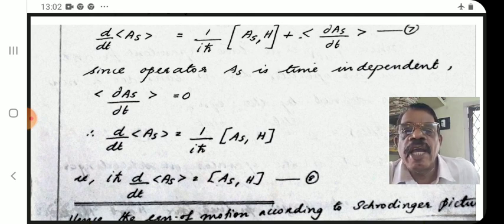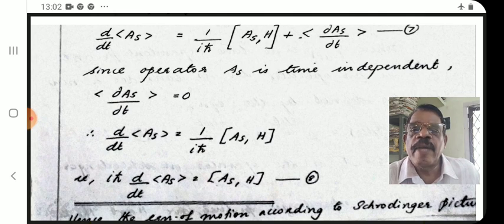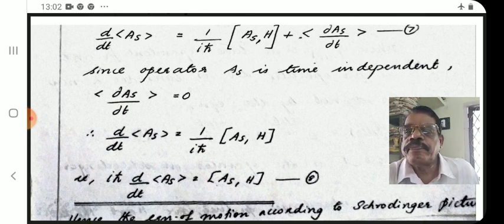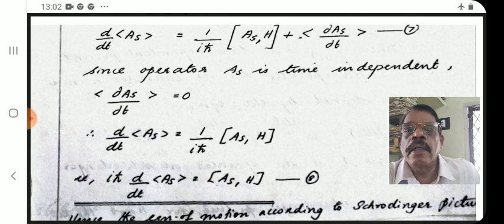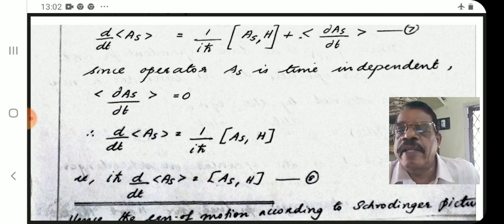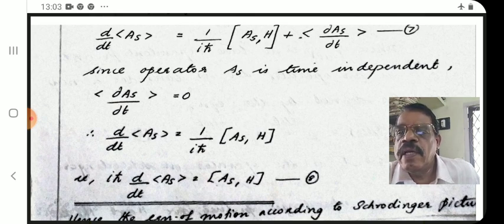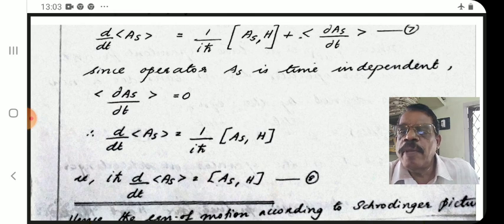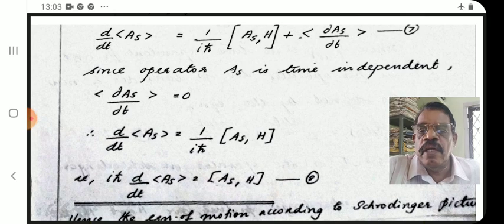Since the operator A is time-independent in the Schrödinger picture, dA/dt = 0. Therefore, the term <dA/dt> = 0, and equation 7 reduces to: d/dt <A> = (1/iℏ) [A, H]. Multiplying both sides by iℏ gives: iℏ d/dt <A> = [A, H], equation number 8.